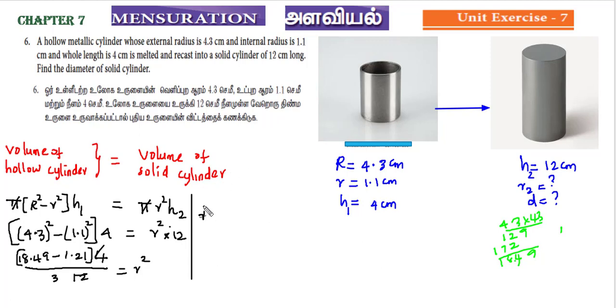So r square is 18.49 minus 1.21. Subtracting 1.21: 9 minus 1 is 8, 4 minus 2 is 2, 8 minus 1 is 7. So 17.28 divided by 3.